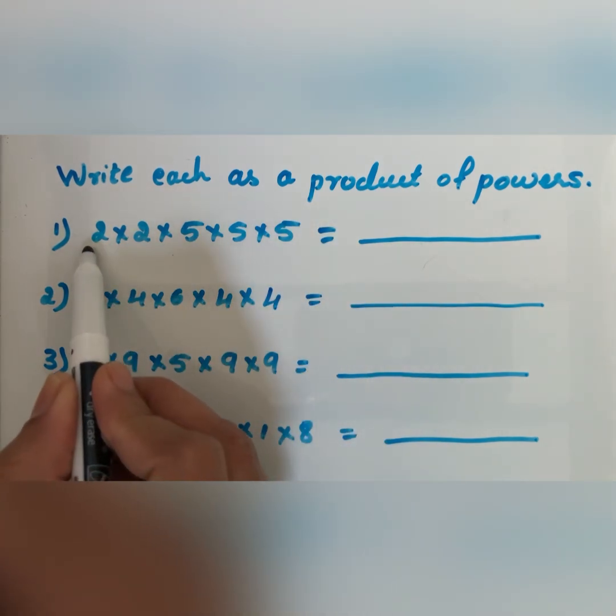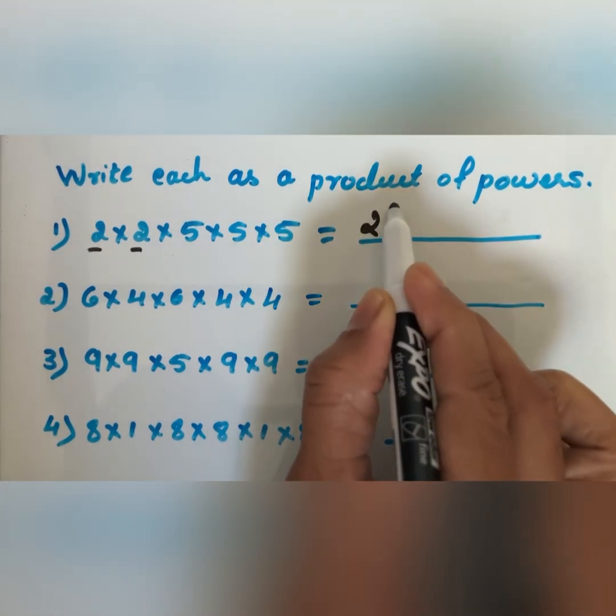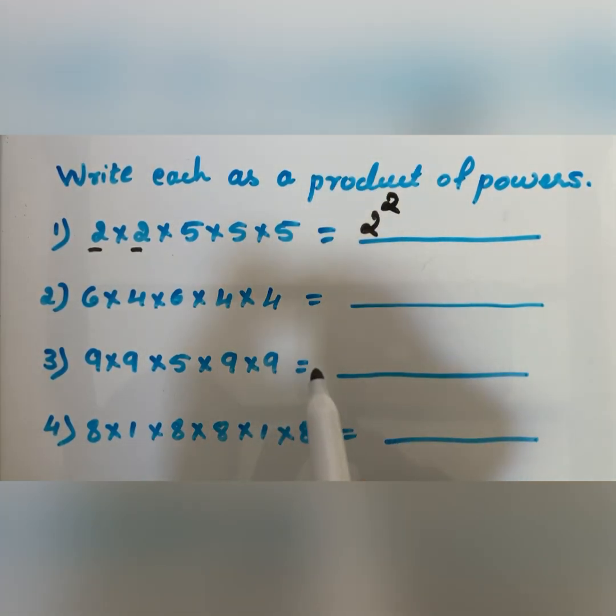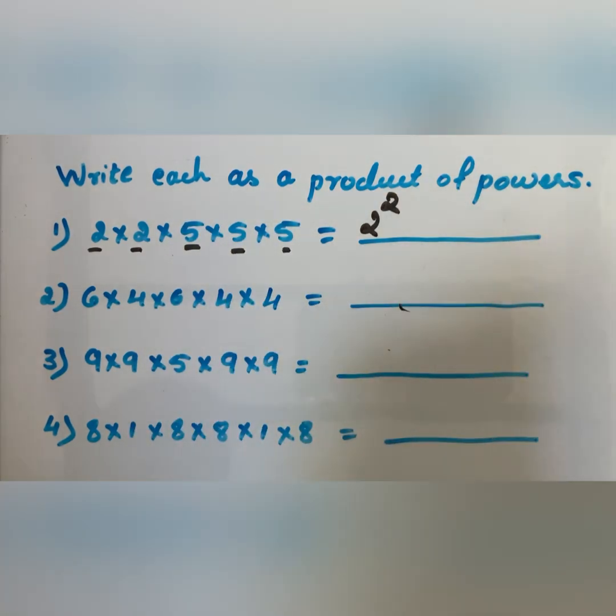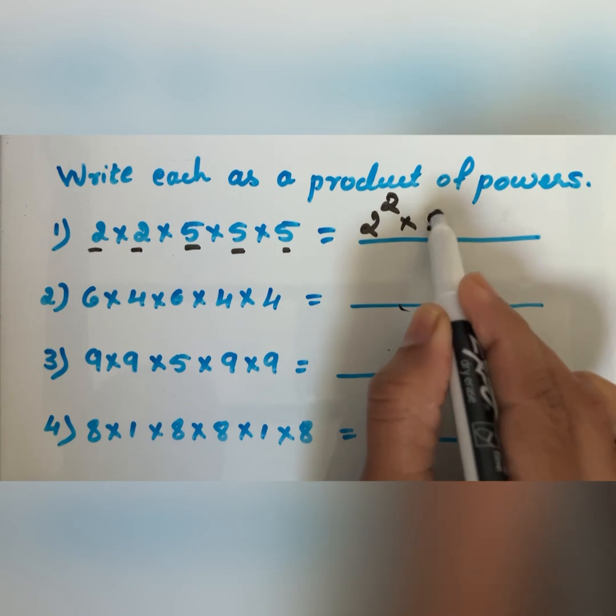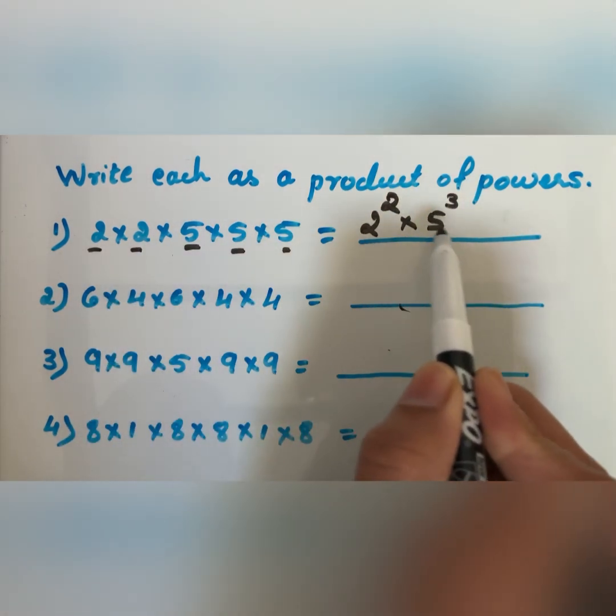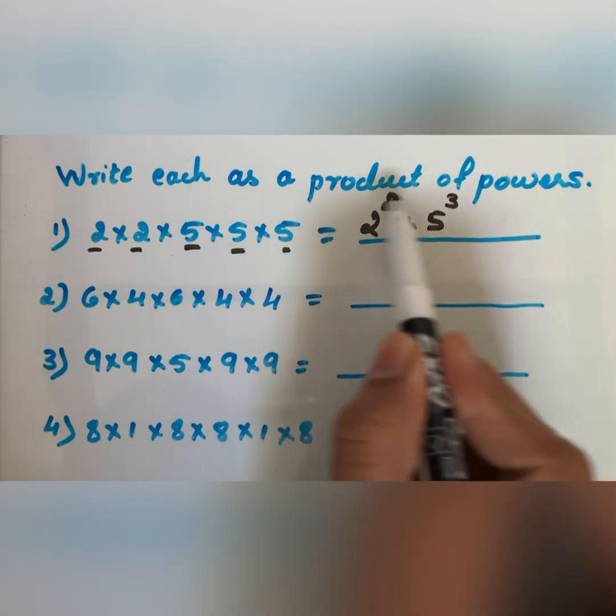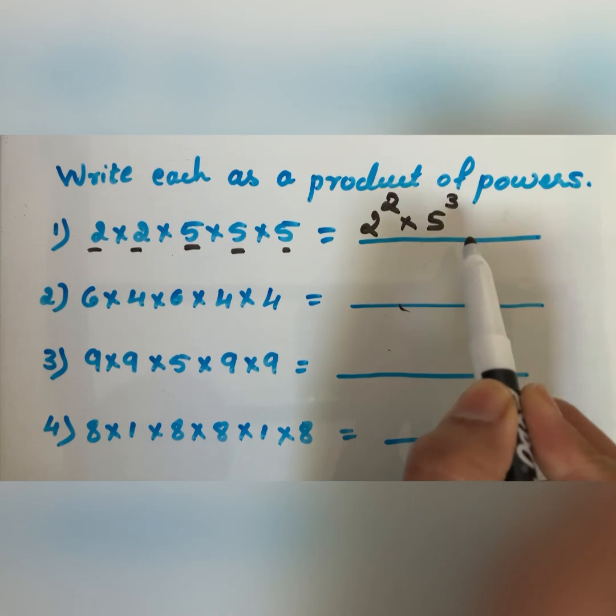2 is taken how many times? Two times, so 2 to the power 2. And 5 is taken 3 times, so 5 to the power 3. Therefore, 2 to the power 2 times 5 to the power 3. This is a product of powers.